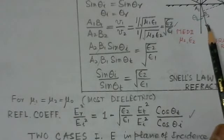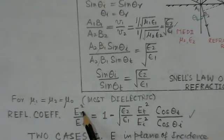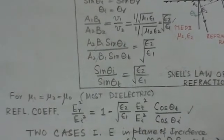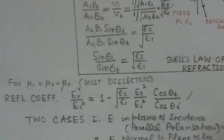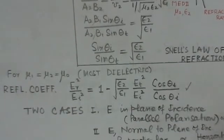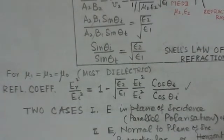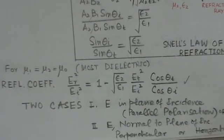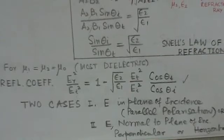So taking this into account, we can write the relation for reflection coefficient as ER over EI. That ER is the reflected electric field and EI is the incident electric field. The ratio is the reflection coefficient. This ET over EI gives me the transmission coefficient, and this relation could be very easily derived. You could see any reference book on electromagnetics. This relation is very well taken care of.